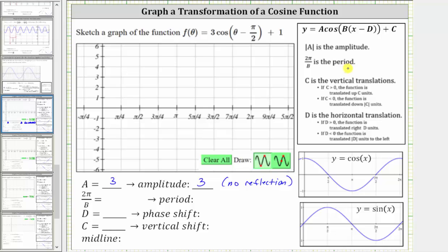2π divided by b equals the period. Therefore, 2π/b = 2π/1 = 2π, so the period equals 2π.